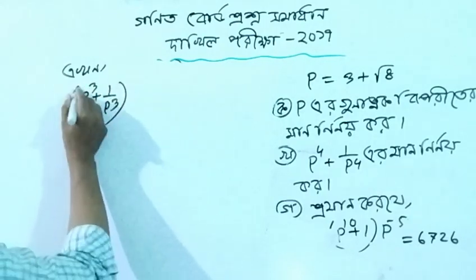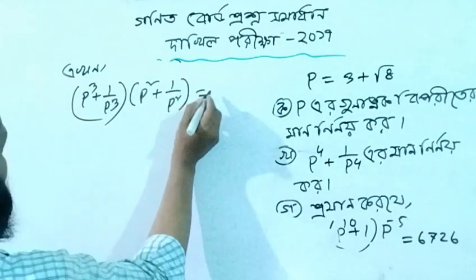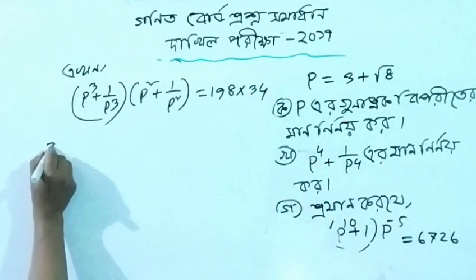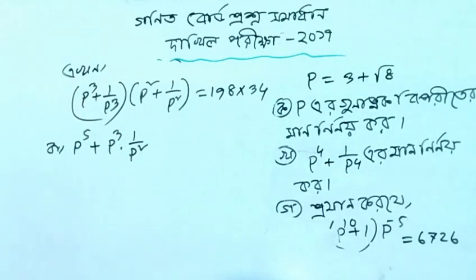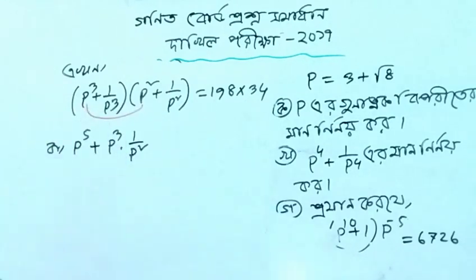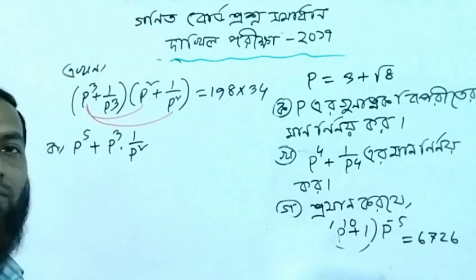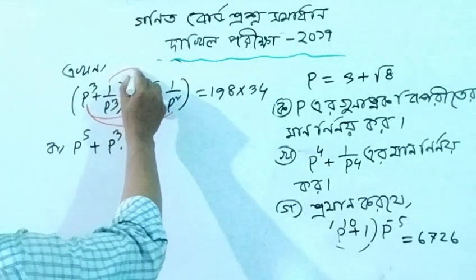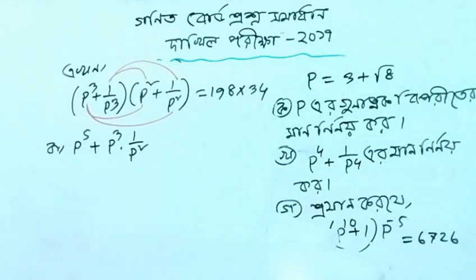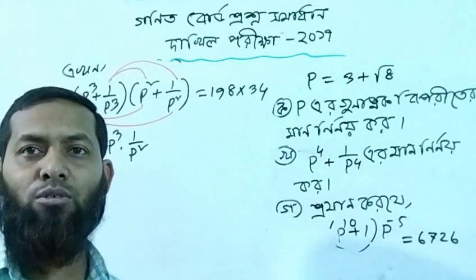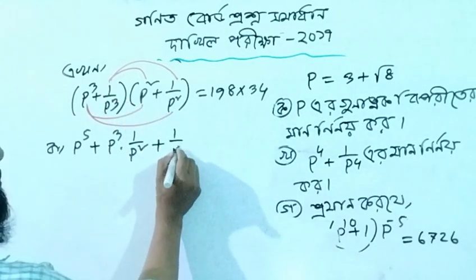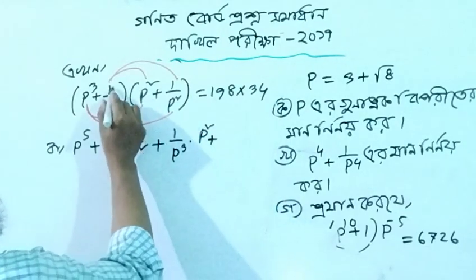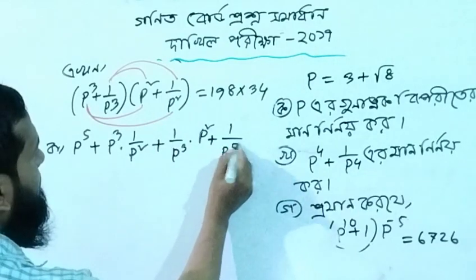p cubed plus 1 by p cubed, p squared plus 1 by p squared, p to the power 5. Computing p cubed into 1 by p squared, and 1 by p cubed. The result equals 5.